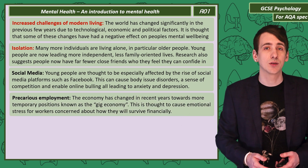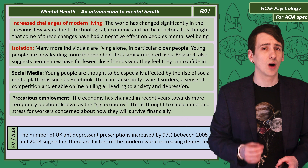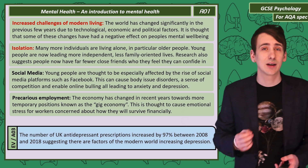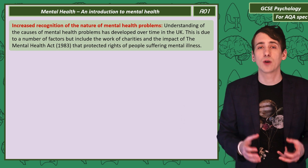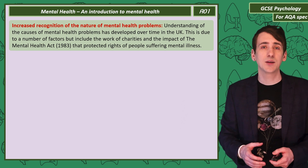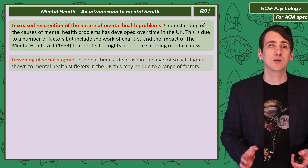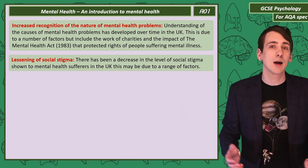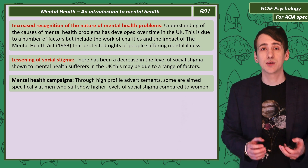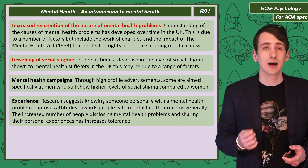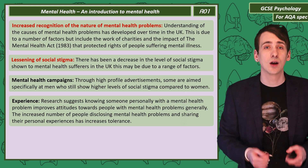Changes to the economy have led to more temporary employment. Workers without job security worry about how they'll survive financially. The data around prescriptions for antidepressant medication seems to support a rise in depression — between 2008 and 2018, prescriptions rose 97%. While modern living may have increased how many people suffer from mental health problems, it also seems to have raised awareness. Understanding the causes has been due in part to the work of charities and changes in law like the Mental Health Act. The social stigma around having a mental health disorder has also reduced, with high-profile campaigns encouraging people to talk more about their mental health, some targeted at men who still show higher levels of stigma compared to women.